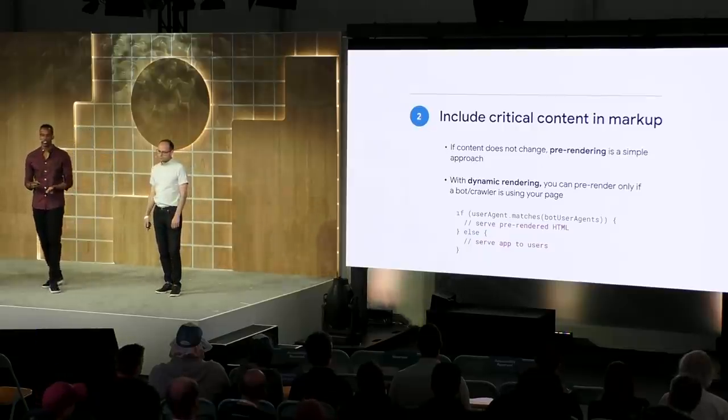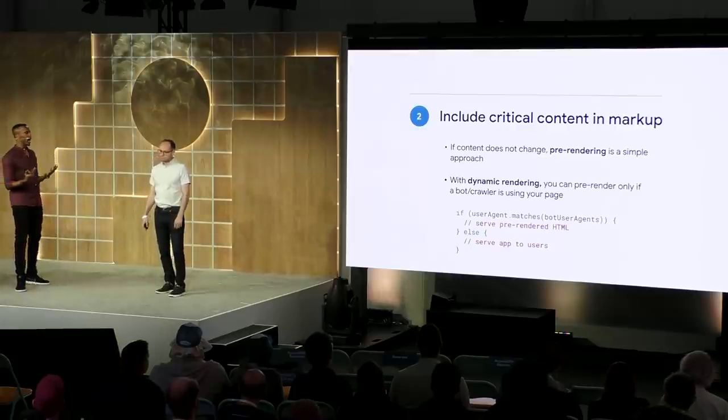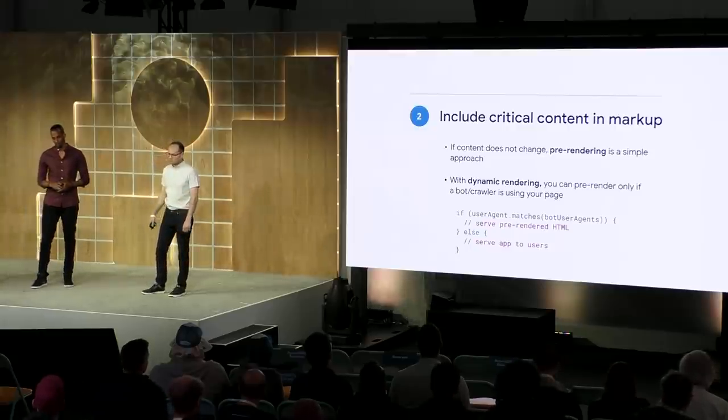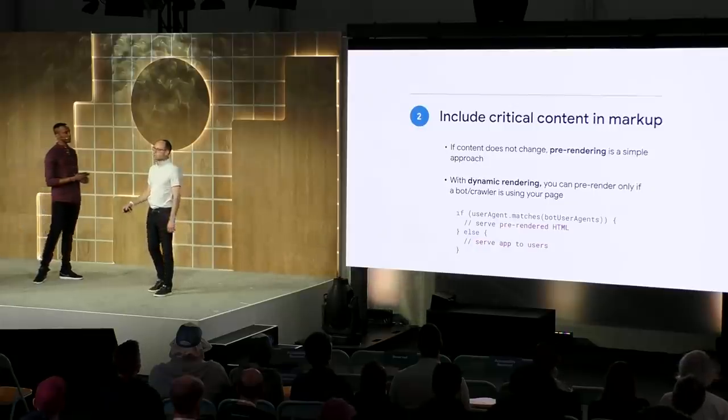Another thing you can consider is dynamic rendering. With dynamic rendering, you can conditionally decide to only serve pre-rendered pages if you detect that a bot is using your page, and fall back to serving your app to your users as normal otherwise. Server-side rendering is pretty useful for making sure that the markup we deliver to bots contains as much information as possible, but that information depends on the server having a bunch of data — which brings us to one of the lesser-talked-about implications of server-side rendering: its effect on data fetching.